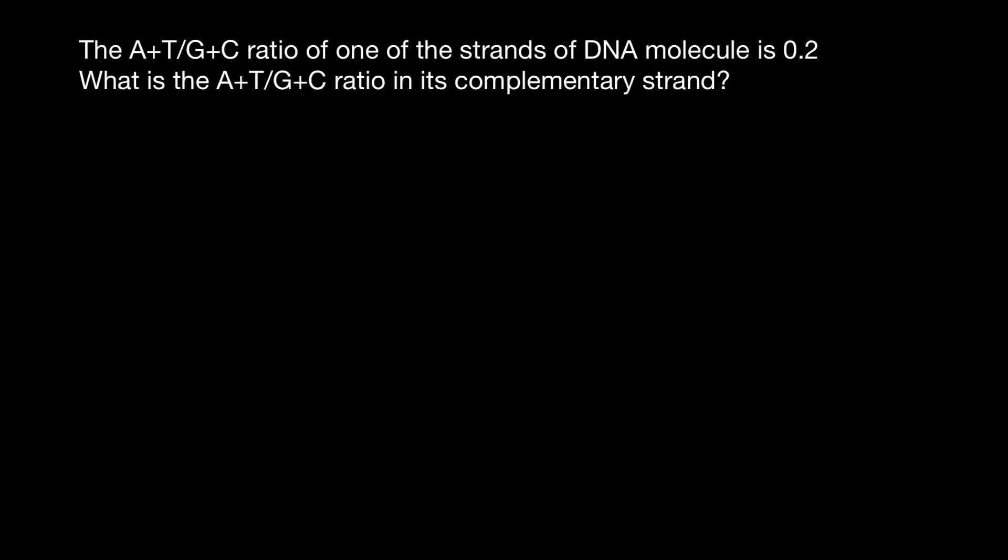Hello and welcome to Nikolai's genetics lessons. And today's question is: the ratio of adenine and thymine to guanine and cytosine of one of the strands of the DNA molecule is 0.2. What is the ratio of adenine and thymine to guanine and cytosine in its complementary strand?